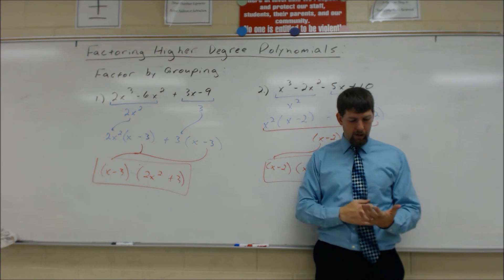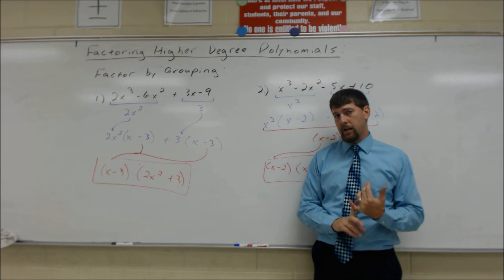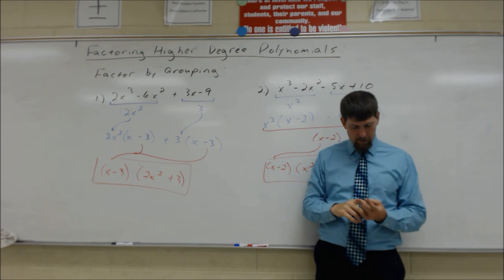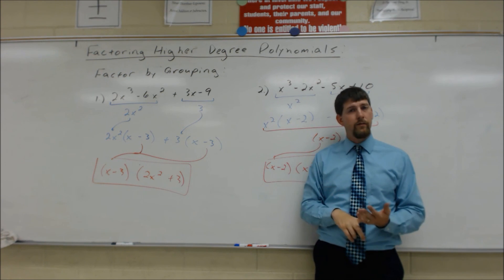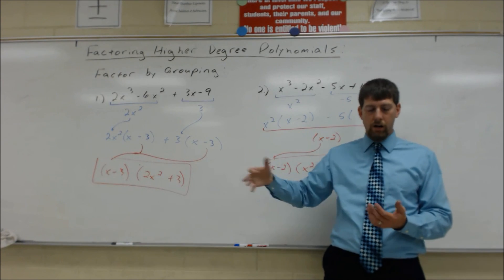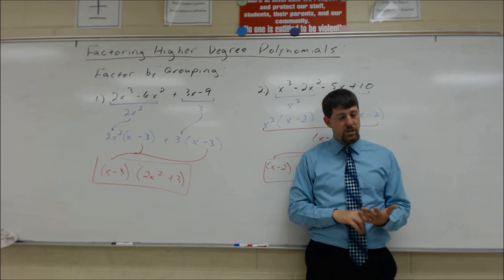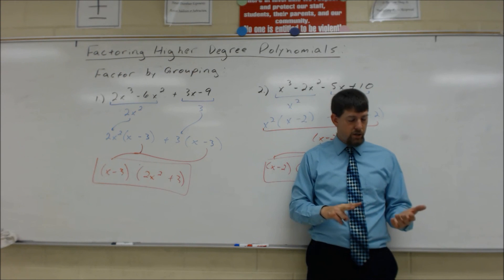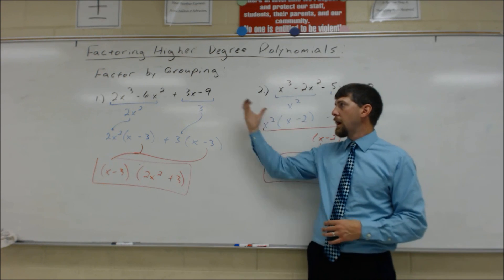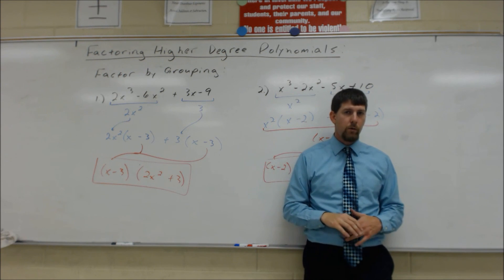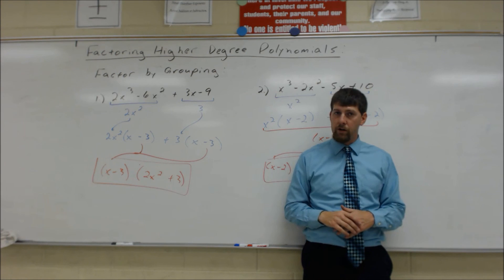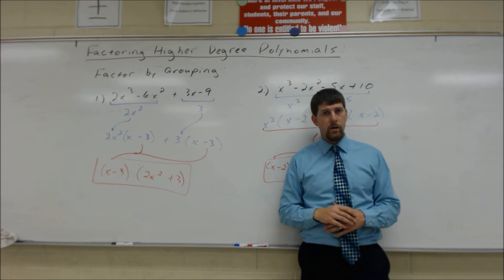So for higher degree polynomials, we can treat it like a quadratic if it's a difference of a perfect square with an even degree, or if it's a quadratic form trinomial with degree, half-degree, and constant. Sum and difference of cubes has its own special factorization strategy. And if we've got four terms or an even number of terms, we can use factoring by grouping. Those are all the different ways we can factor higher degree polynomials. I'll see you in class tomorrow, guys.